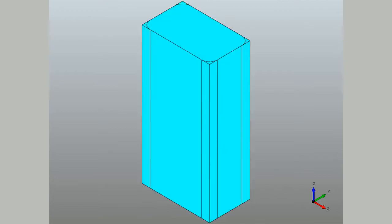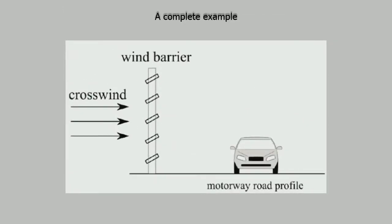Now that we have seen how fillets are de-featured, let's have a look at the de-featuring of a model containing other target features in addition to fillets. As an example, we consider the model of a wind barrier which is used to alter the flow pattern so as to reduce the crosswind forces acting on the vehicles going on a highway.